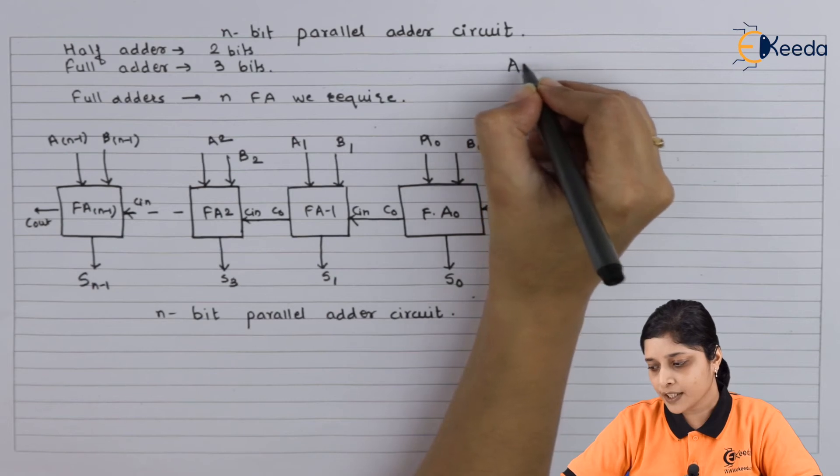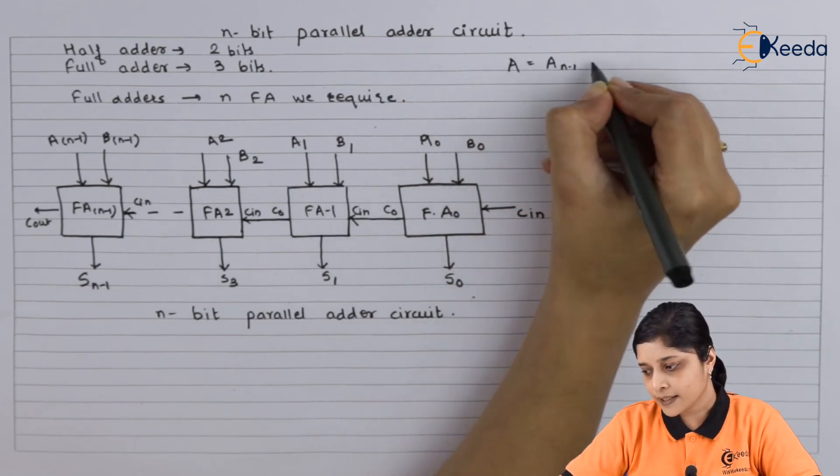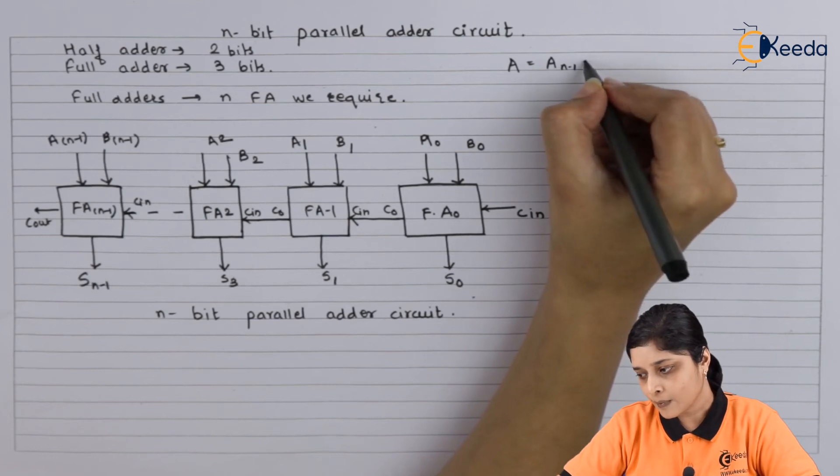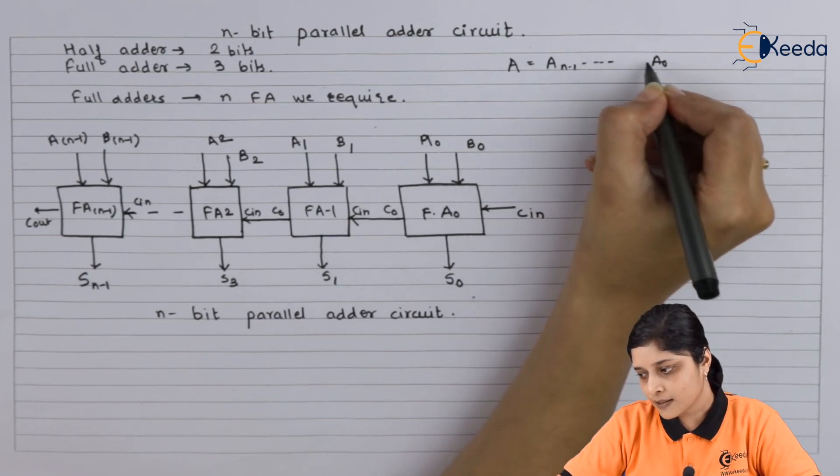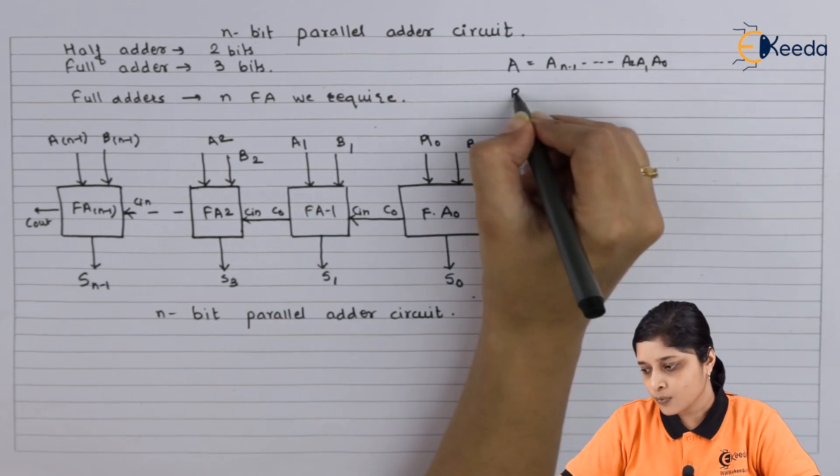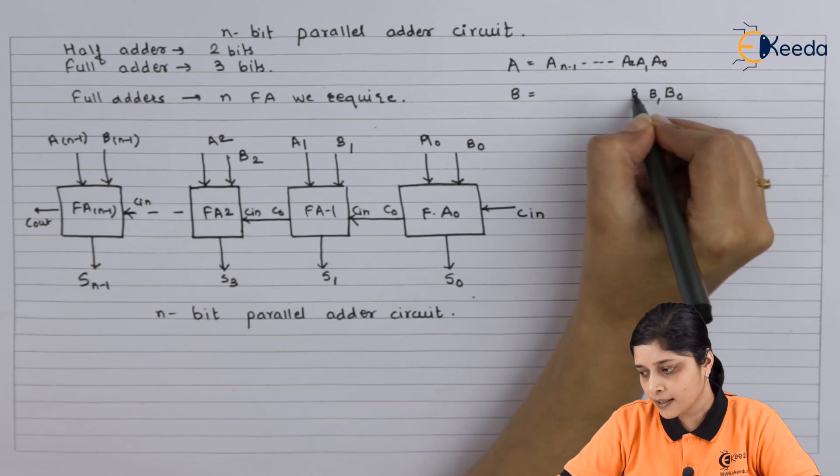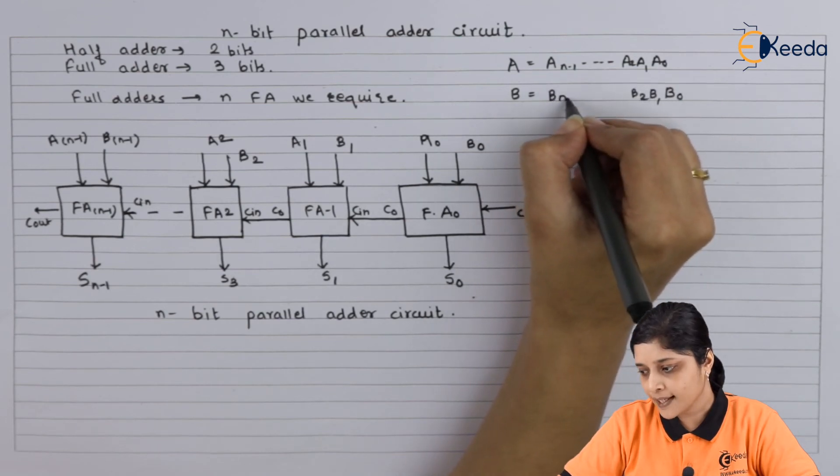Here the word we have taken A, it is up to A n minus 1. Here A0, A1 and A2. For B, B0, B1 and B2 up to B n minus 1.